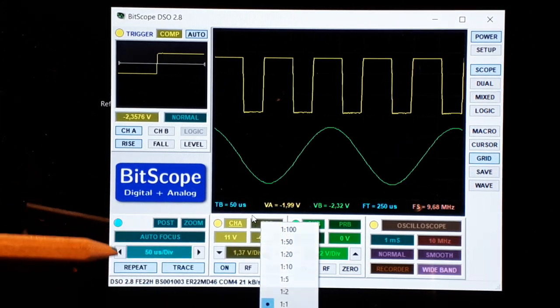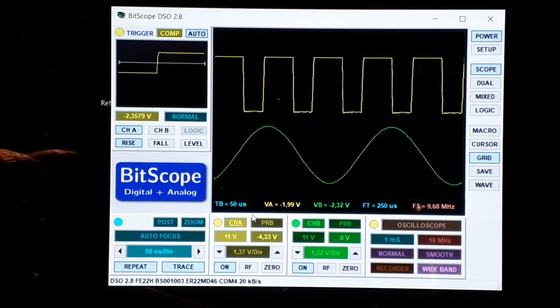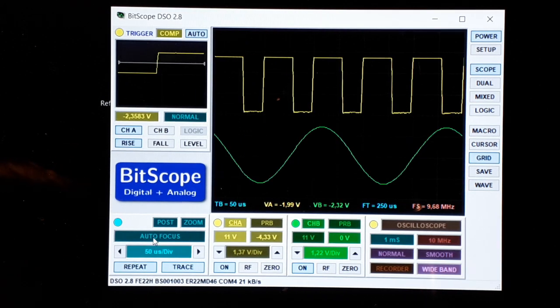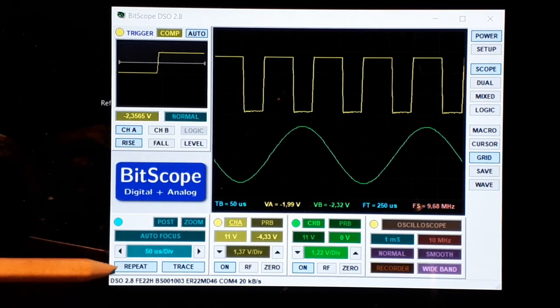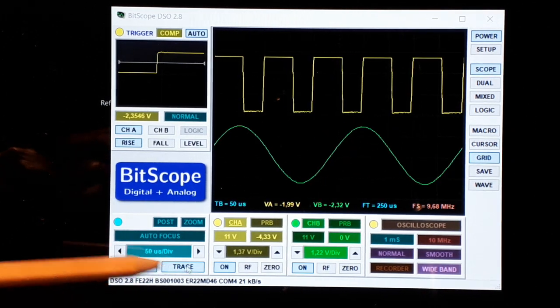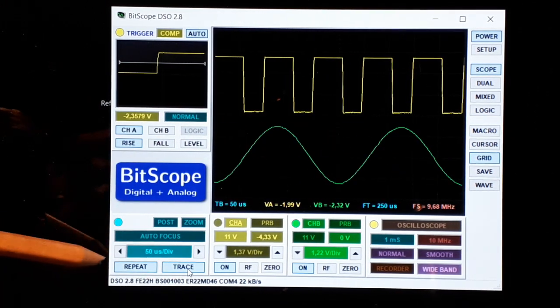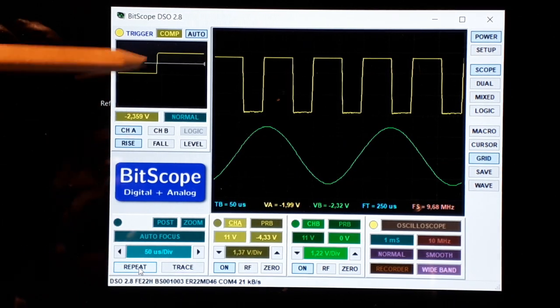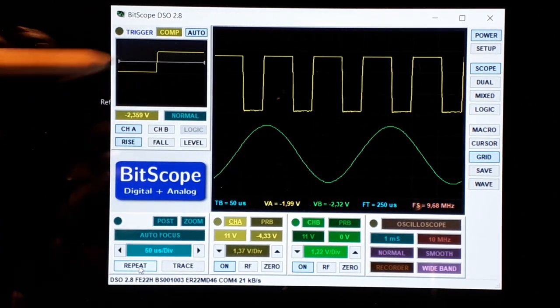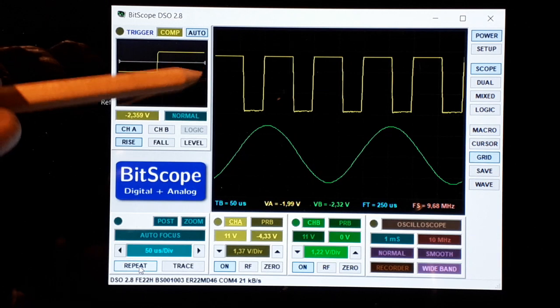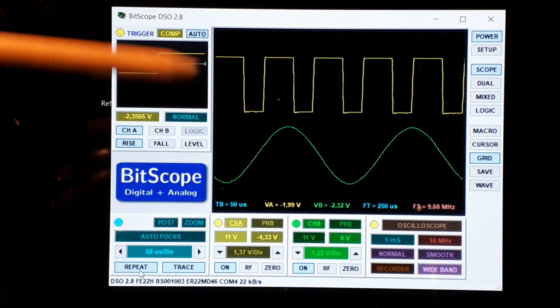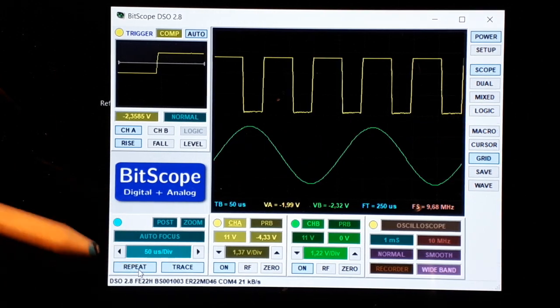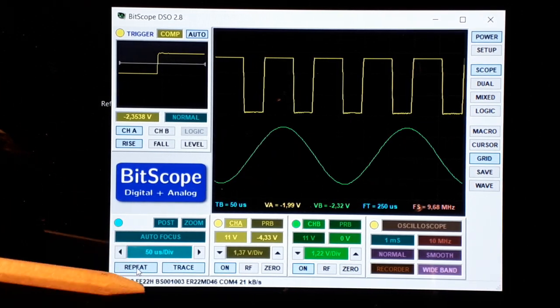Then we have here the time base control panel with repeat and trace. Trace is to trace directly and repeat is depending on the trigger. Whenever the trigger detects the condition it just stops there or just repeats the trigger, repeats the capture all the time.